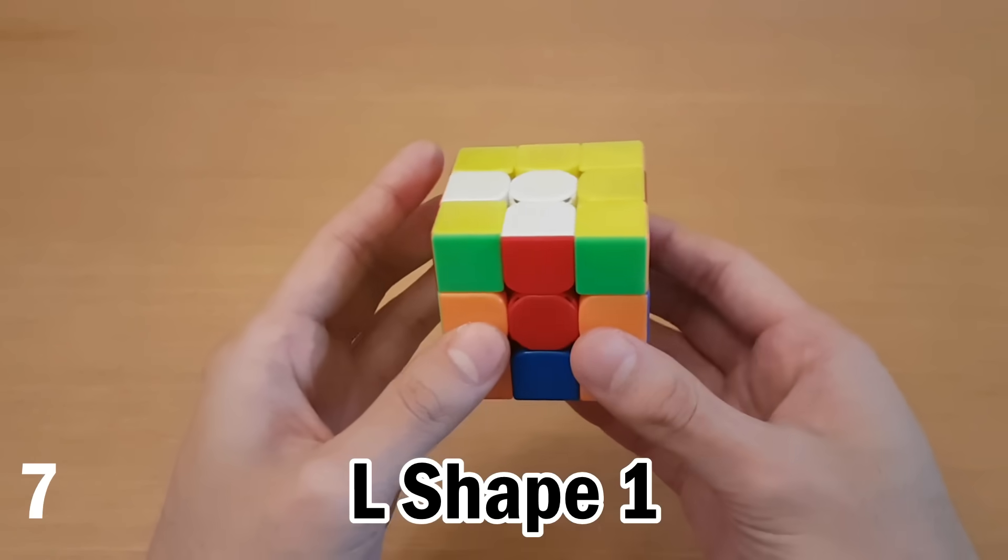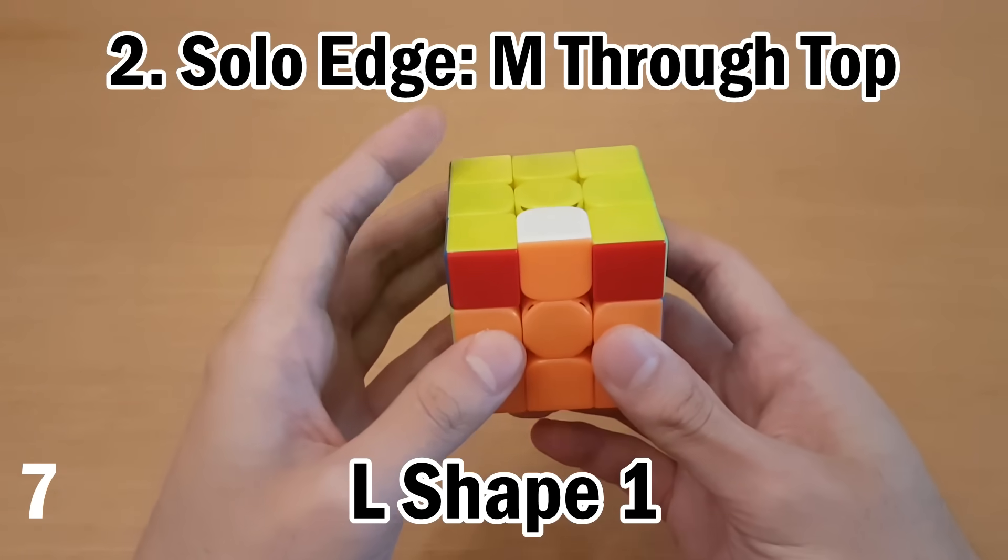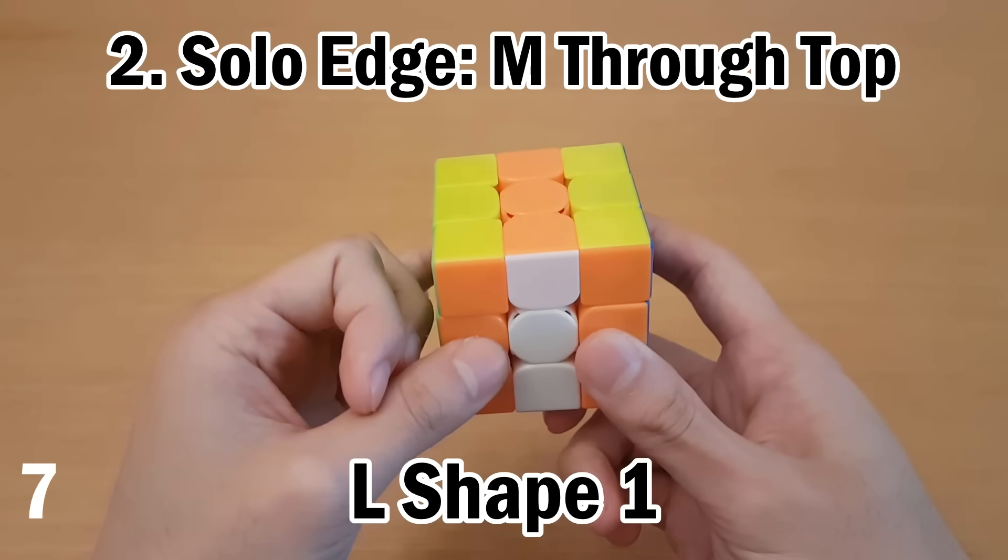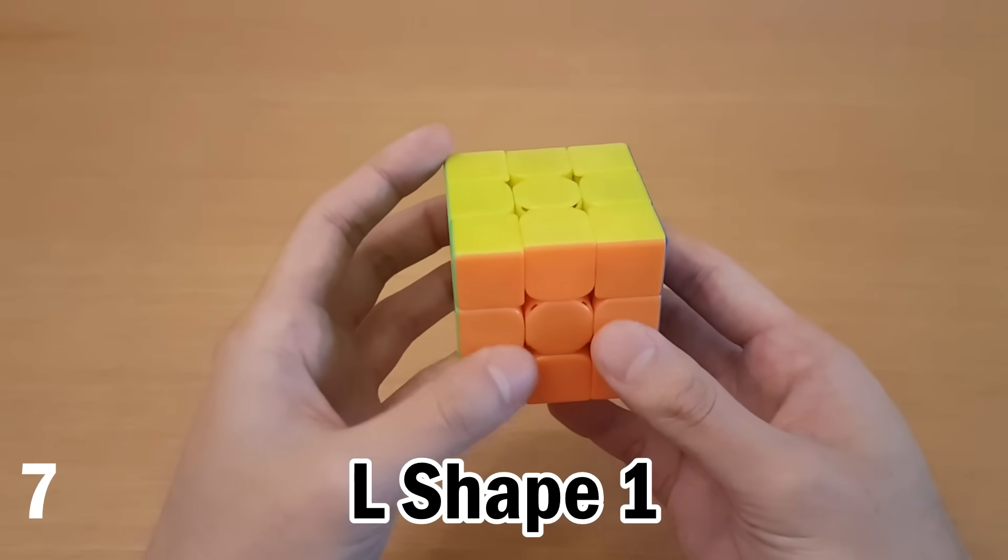But for example, in this case, which is pretty much the same, we're going to do M2 and then move this one here. And we're going to move it through the top because it's a solo edge. U2, in this case, I pretty much did the same thing, but I noticed all of these are solved. So I know it's just going to be solved at the end.